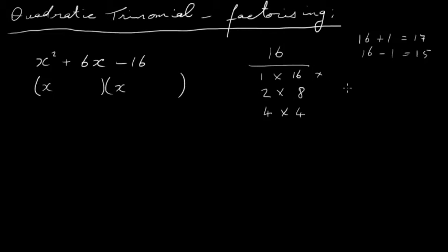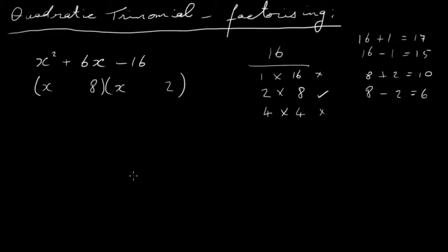For 2 and 8: 8 plus 2 is 10, but 8 minus 2 is 6, so that works. 4 times 4 gives either 8 or 0, so that doesn't work. We'll use 8 and 2. Putting 8 here and 2 here, when we multiply 8 by 2 we need minus 16, so the signs in front must be different — one plus and one minus.